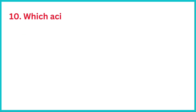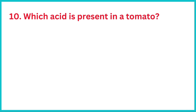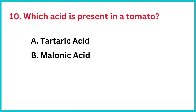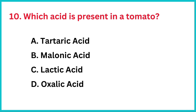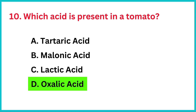Which acid is present in a tomato? The correct answer is option D: Oxalic acid.